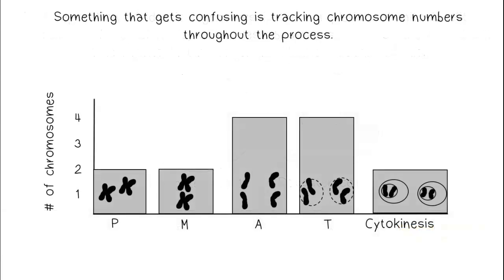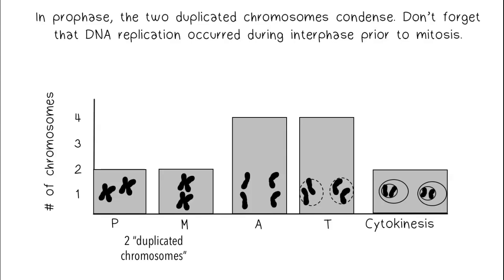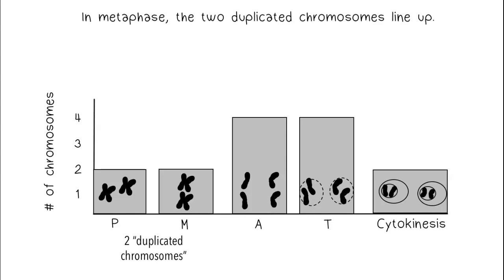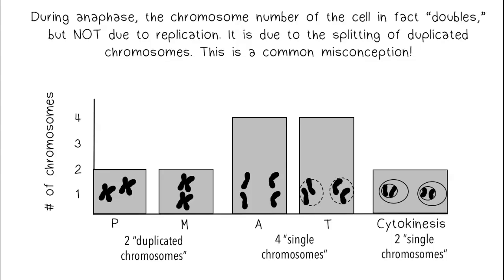Something that gets confusing is tracking chromosome numbers throughout the process. Let's take a look at a simple example of a cell with just two chromosomes going through mitosis. In prophase, the two duplicated chromosomes condense. Don't forget that DNA replication occurred during interphase prior to mitosis. In metaphase, the two duplicated chromosomes line up. In anaphase, duplicated chromosomes are separated into single chromosomes. Now the cell has four individual chromosomes. During anaphase, the chromosome number of the cell in fact doubles, but not due to replication — it is due to the splitting of duplicated chromosomes. This is a common misconception.